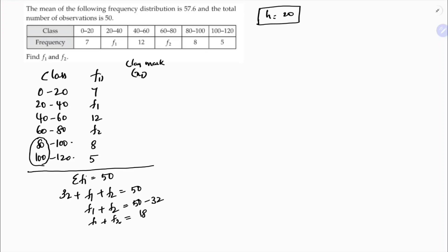Calculating class marks: (0+20)/2 = 10, (20+40)/2 = 30. Instead of calculating all individually, keep adding 20: so 50, 70, 90, 110. Now we'll solve using the step deviation method because the calculation will be easier.